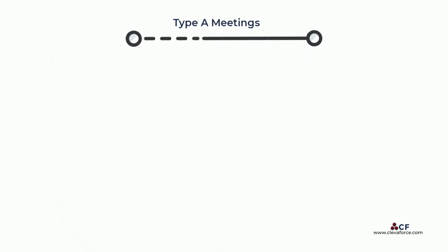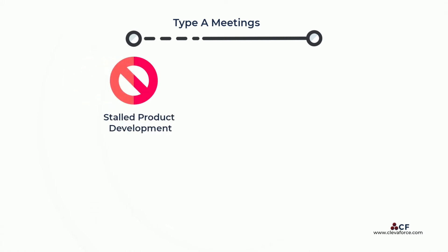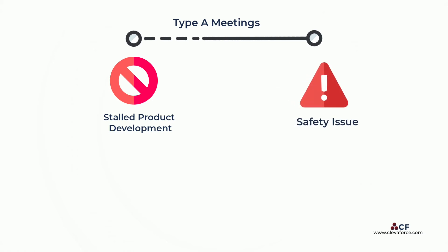Type A meetings are required to restart a stalled product development program or to address a critical safety issue. Before submitting a type A meeting request, sponsors should contact the review office to discuss the request's appropriateness.